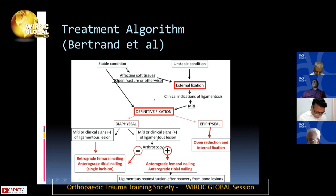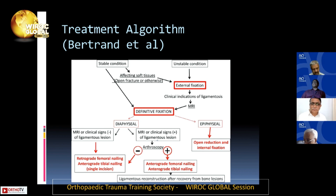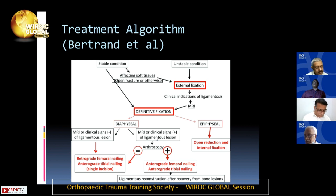If the patient is in an unstable condition, similar to bilateral femoral fractures, we perform damage control orthopaedics (DCO) with external fixation. If there are clinical indications of ligamentous injury, do an MRI, then proceed to definitive fixation later.